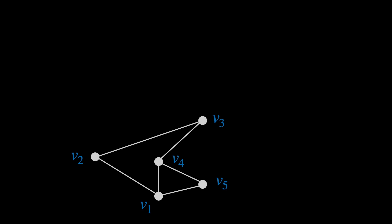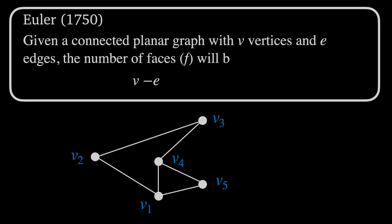Given a connected planar graph with V vertices and E edges, the number of faces F will be given by V minus E plus F equals 2. One thing to bear in mind is that the number of faces, which is normally the regions enclosed by edges like F1 and F2 here, also includes the face outside the graph shown here by F3.